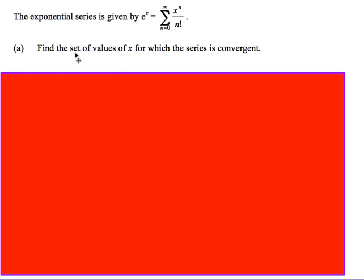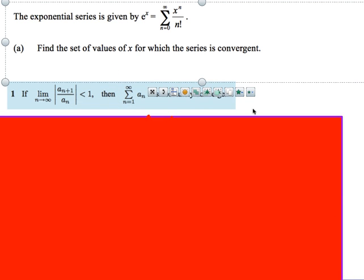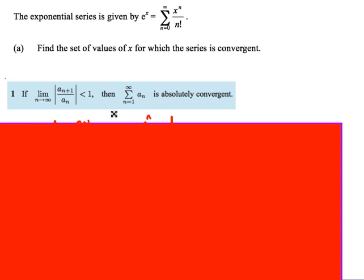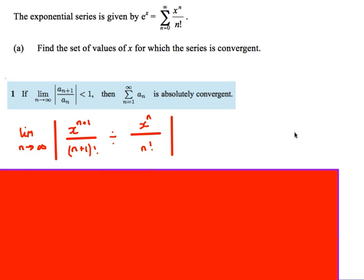Back to the question: find the set of values of x for which the series is convergent. We want to show that when the limit as n goes to infinity of a_(n+1) over a_n is less than 1, then it's absolutely convergent and hence convergent. I replace n with n+1, so I get x to the n+1 all over (n+1) factorial, divided by x to the n over n factorial — the absolute value of that — and I want the limit as n approaches infinity.